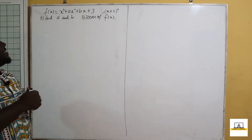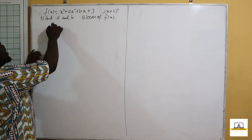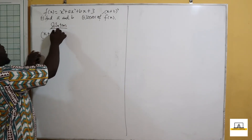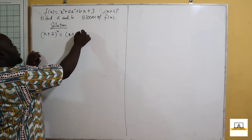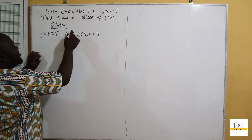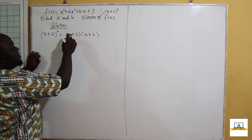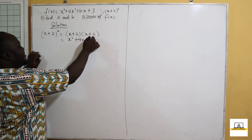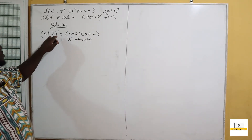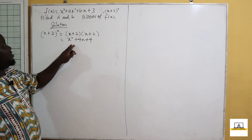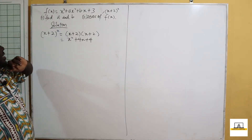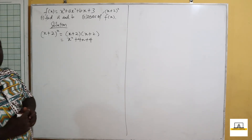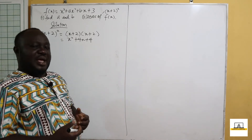So if this is a factor, we are going to expand x plus 2 all squared. This gives us (x+2)(x+2), which expands to x squared plus 2x plus 2x plus 4. So the expansion of (x+2)² is x squared plus 4x plus 4.